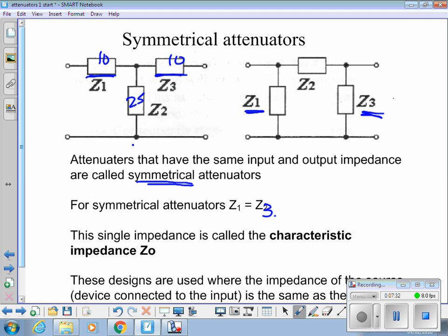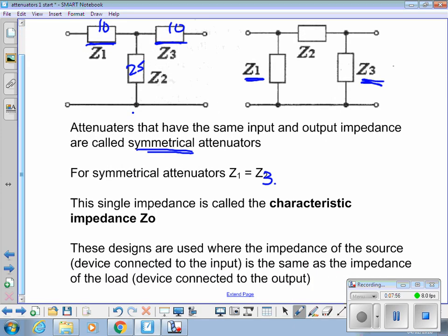The single impedance, that is the input and output impedance, let's say 50 ohms in our example, is called the characteristic impedance, or ZO. So it's got one characteristic impedance of that attenuator, it's called ZO. Used where the impedance of the source, device connected to the input, is the same as the impedance of the load, the device connected to the output. This is said to have a ZO, or characteristic impedance.